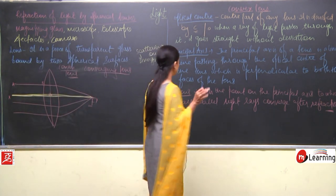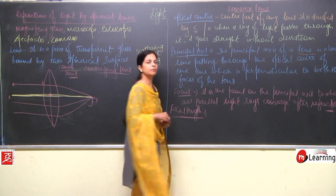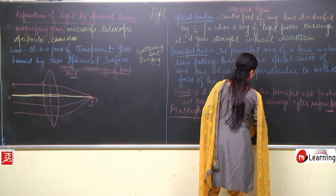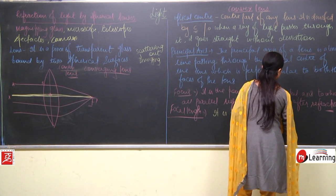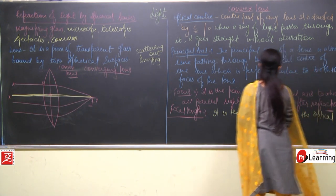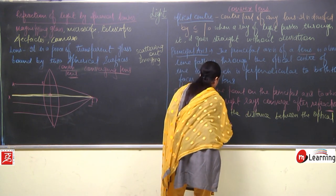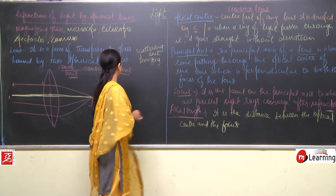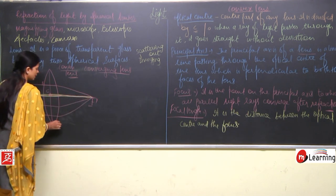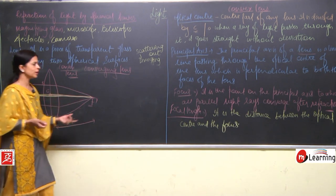When we talk about lenses we also need to discuss focal length, as we discussed for mirrors also. Focal length is the distance between the optical center and the focus. Say this is C and this is F - the distance between C and F, meaning the distance between the optical center and the focus, is known as the focal length.